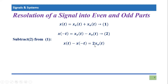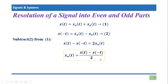If we solve it for the odd part, it becomes: x_o(t) = [x(t) - x(-t)] / 2. In the case of the even part, it was the average of the two signals, but here we are taking half of the difference of the two signals.